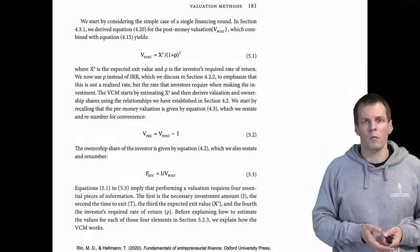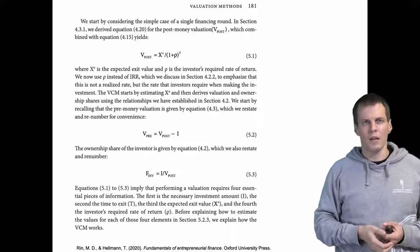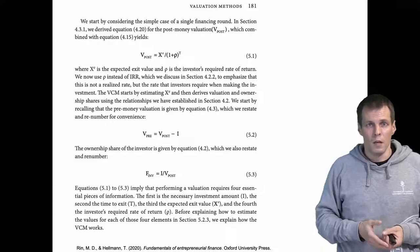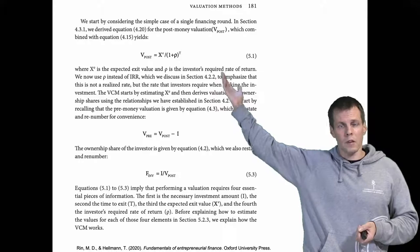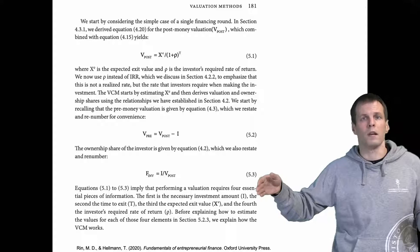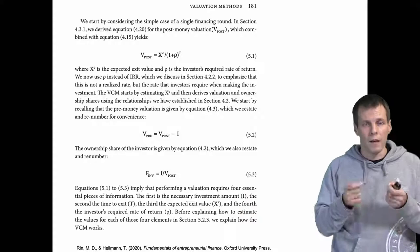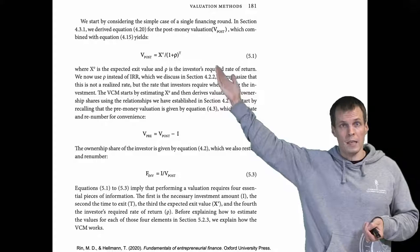The venture capital method works by starting with an estimate of the exit value Xe — what the company's valuation would be if everything goes well and it can sell itself to a larger company or do an IPO. You then discount that exit value to the current time. The method does not really account for what happens between investment and exit, since the company will not pay dividends — all money is reinvested to maximize the exit value. The exit is when the venture capitalist realizes the profit.